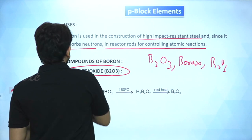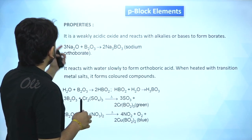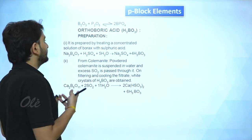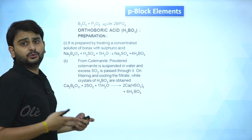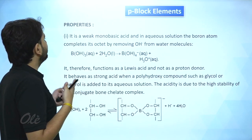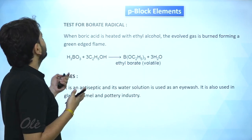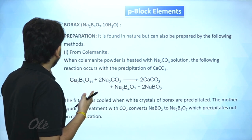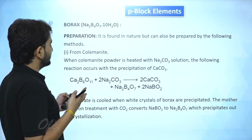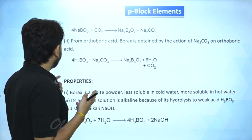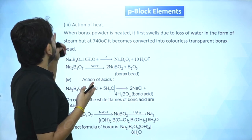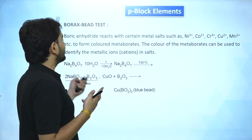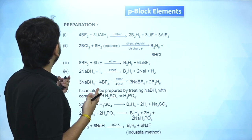In the next class we'll discuss the properties of all these compounds in detail — boron trioxide, orthoboric acid (H₃BO₃), the complexes it forms, the borate radical, and borax. The preparation and properties of borax (Na₂B₄O₇) are very important, including the borax bead test, its action when heated, and its uses. Then we'll cover diborane.